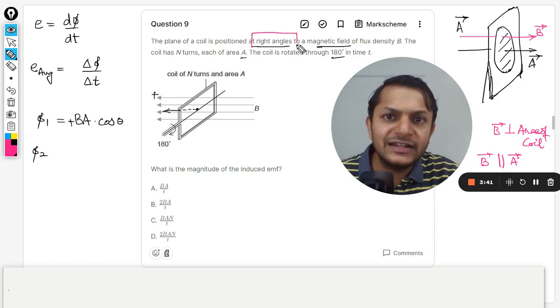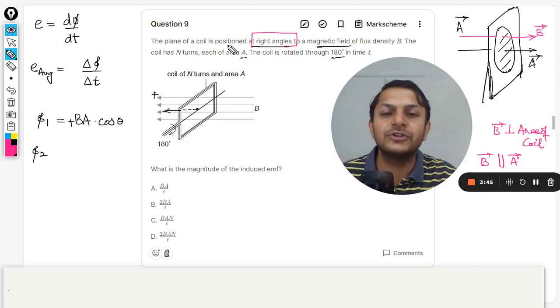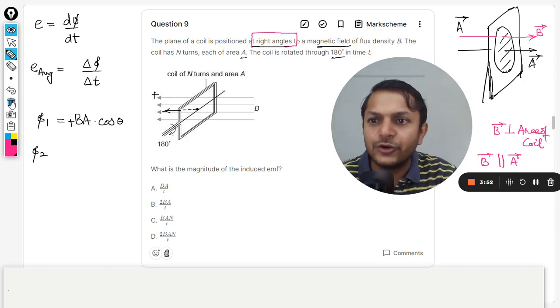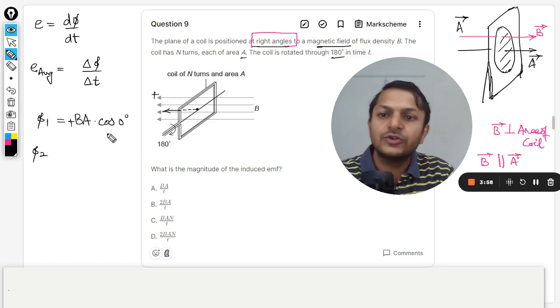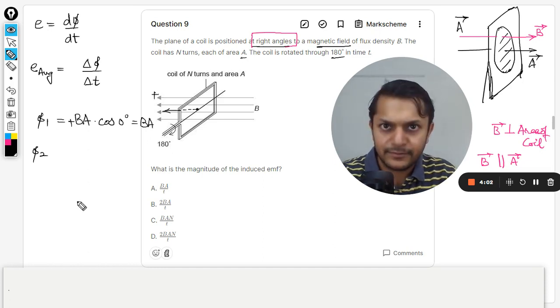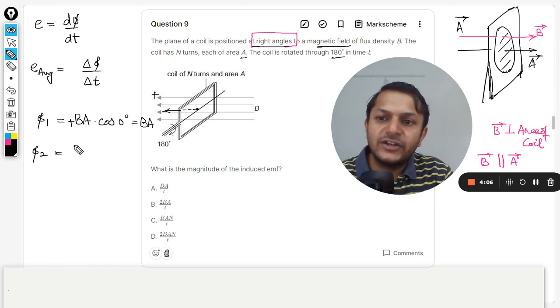We are actually concerned with the area vector. So do not be fascinated with this thing when you read 'right angles' and eventually you just jump to the conclusion that theta is 90 degrees. Theta is not 90 degrees—it is zero degrees. So for this case it is zero degrees, so here I'm just substituting it to be zero. So cos zero is one, so clearly this is equal to B A.